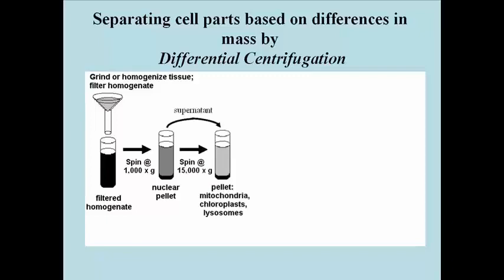The liquid above the nuclear pellet is again centrifuged at about 15,000 times g. These numbers are approximate and vary depending on the actual cell fractionation, but the next level of fractionation would occur at 15,000 times gravity, and the 15,000g pellet contains the next largest subcellular structures. In animal cells this would be mitochondria; in plant cells this would also include chloroplasts as well as mitochondria.